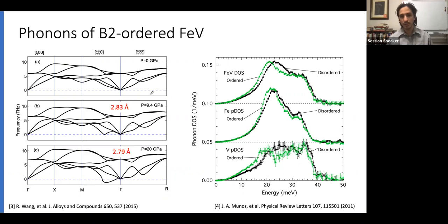Over here, we have the phonons of the B2 order phase of iron vanadium. You can see that at a pressure of about 9.4 gigapascals, a lattice parameter of 2.83, this part becomes imaginary. If you continue compressing the sample, this whole branch becomes imaginary. These are density functional theory results at zero Kelvin. Over here, we have experimental phonon density of states using neutrons and x-rays of iron vanadium. One of the quirky things about this material is that in the order phase, the phonons are softer than in the disorder iron vanadium phase.